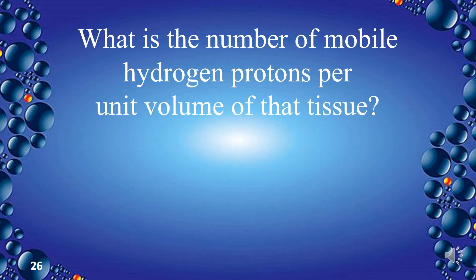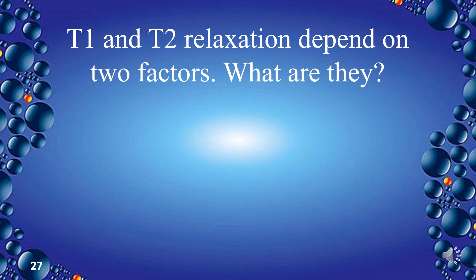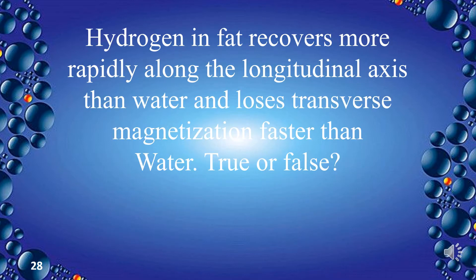What is the number of mobile hydrogen protons per unit volume of a tissue? It is called proton density (PD). T1 and T2 relaxation depend on two factors: whether the molecular tumbling rate matches the Larmor frequency of hydrogen, and whether the molecules are closely packed together. Hydrogen in fat recovers more rapidly along the longitudinal axis than water and loses transverse magnetization faster than water — true.